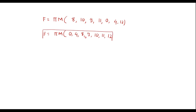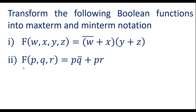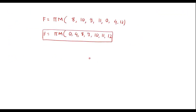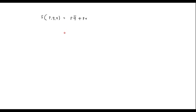Writing in ascending order: f = Π M(0, 4, 8, 9, 10, 11, 12). This is the max term notation for the given Boolean expression. Now let me consider the min term notation. The second function is f(p, q, r) = pq̄ + pr. To represent it in SOP form, we convert to standard canonical SOP form where each product term consists of all variables. In the first term, r is missing; in the second term, q is missing, so we need to add them.